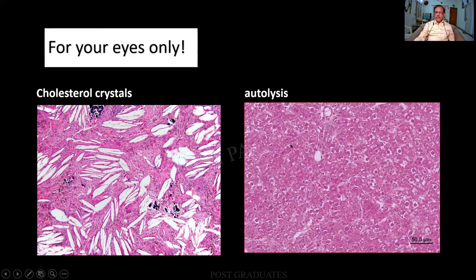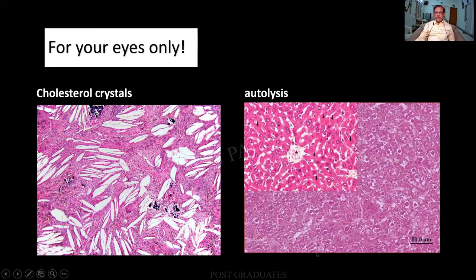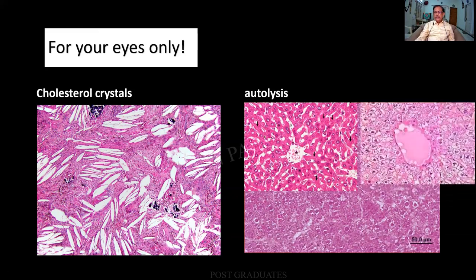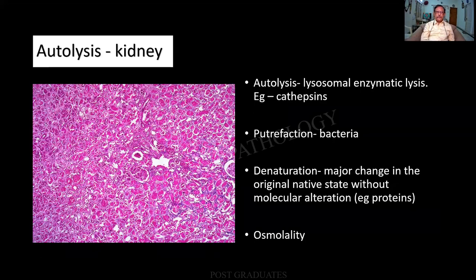Secondly, you cannot appreciate the nucleus or the cytoplasm, let alone a gland. Autolysis has already set in and sometimes a diagnosis of free of tumor or tumor-present cannot be given. In the liver, one can see normal radiating cords of hepatocytes from the central vein, but here autolysis has started — there is bulging of the cell, rupture, and 100% complete autolysis in another specimen. In the kidney, hardly anything is recognizable — maybe some outline of a glomerulus, but it is a futile effort. Autolysis is caused by lysosomal enzymes such as cathepsins; putrefaction by bacteria.